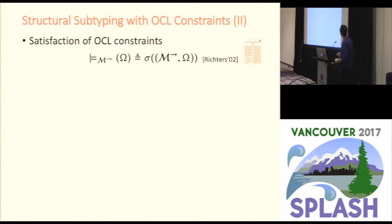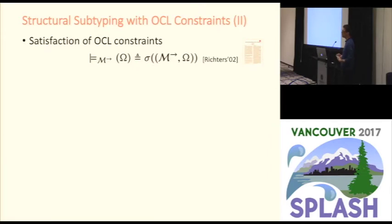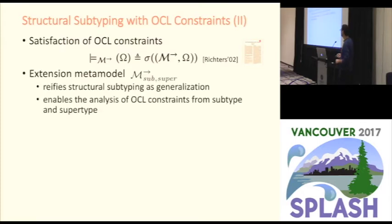Reusing the interpretation of OCL expressions defined in Rister's thesis, we can constrain the semantics of a metamodel enriched with constraints. The problem is that the subtyping relationships between the subtype metamodel and the supertype metamodel are implicit because they are structural, whereas tools for reasoning about constraints work with explicit subtyping relationships defined with generalizations. So we synthesize an extension metamodel to verify structural subtypings inferred automatically using our subtyping relation.